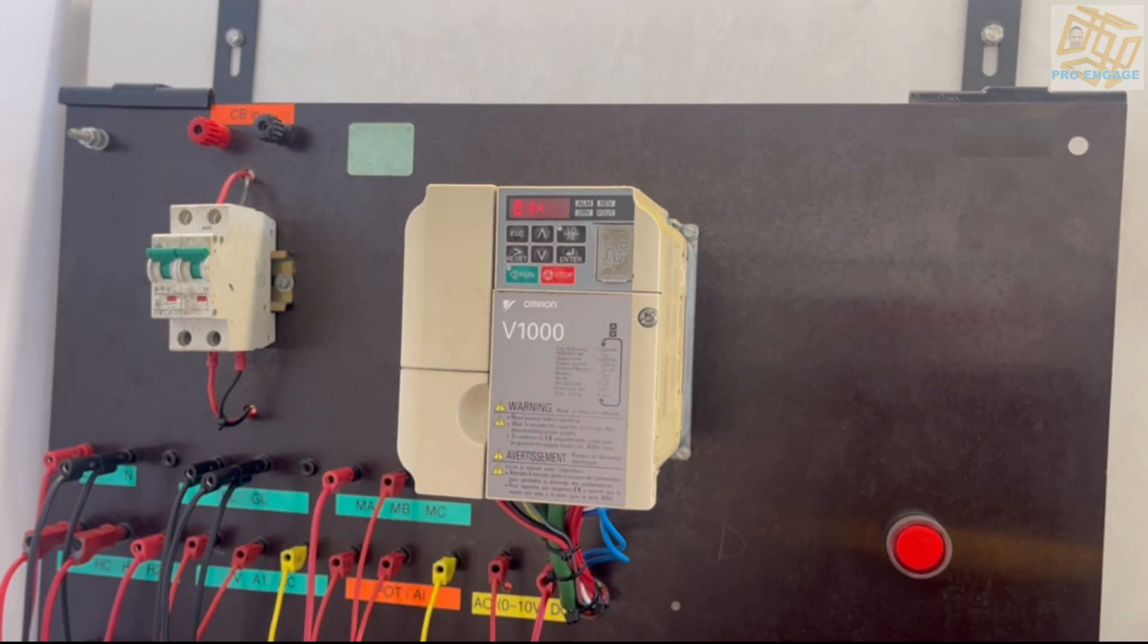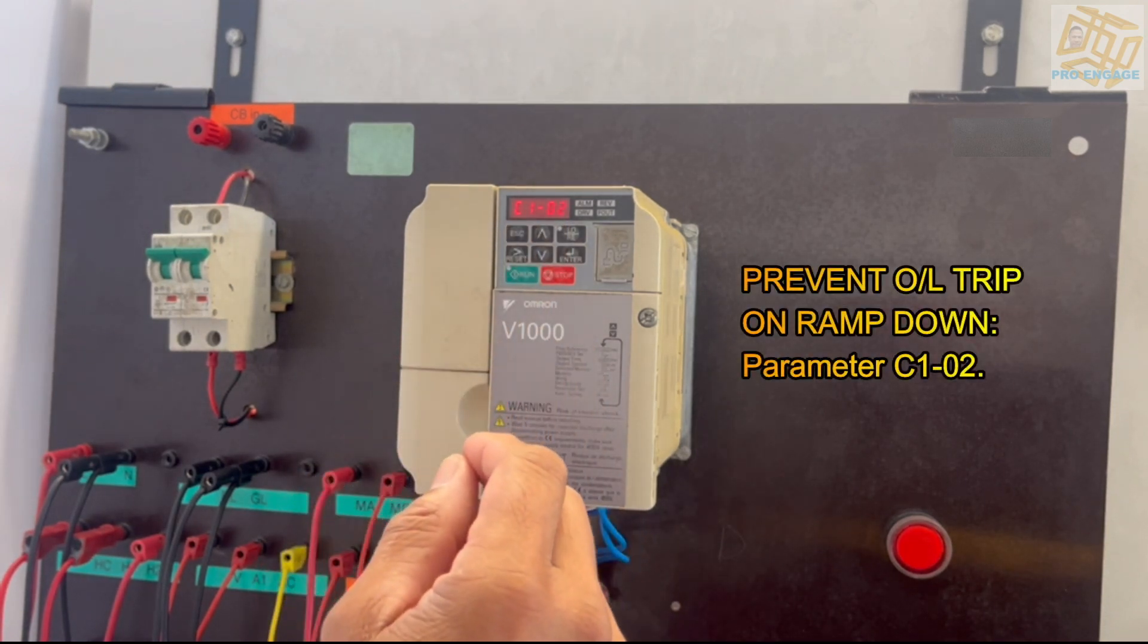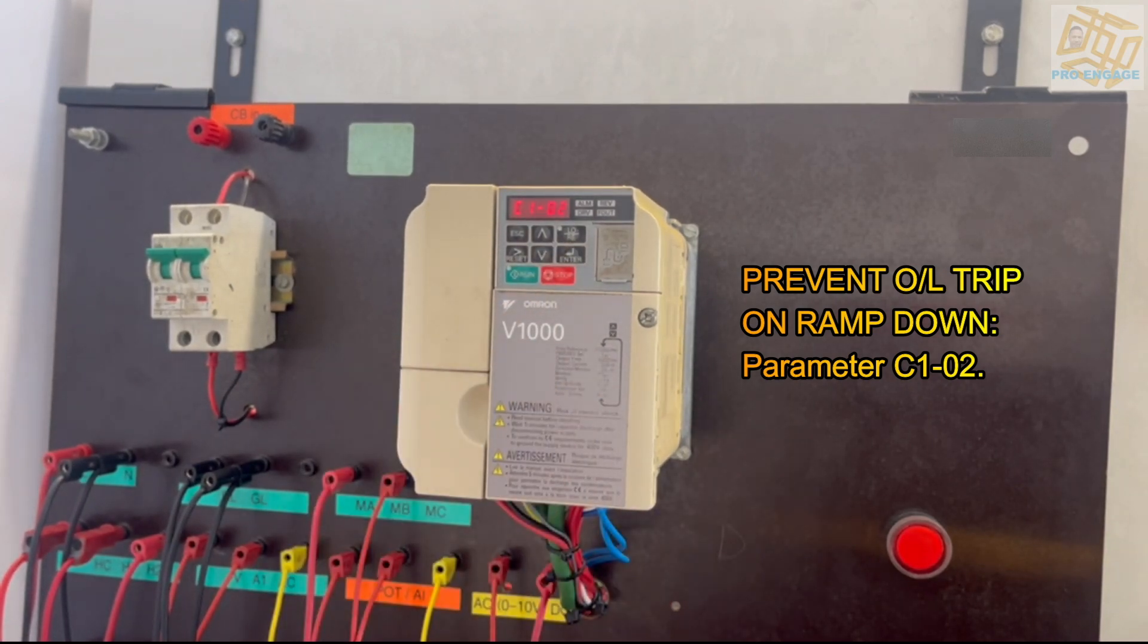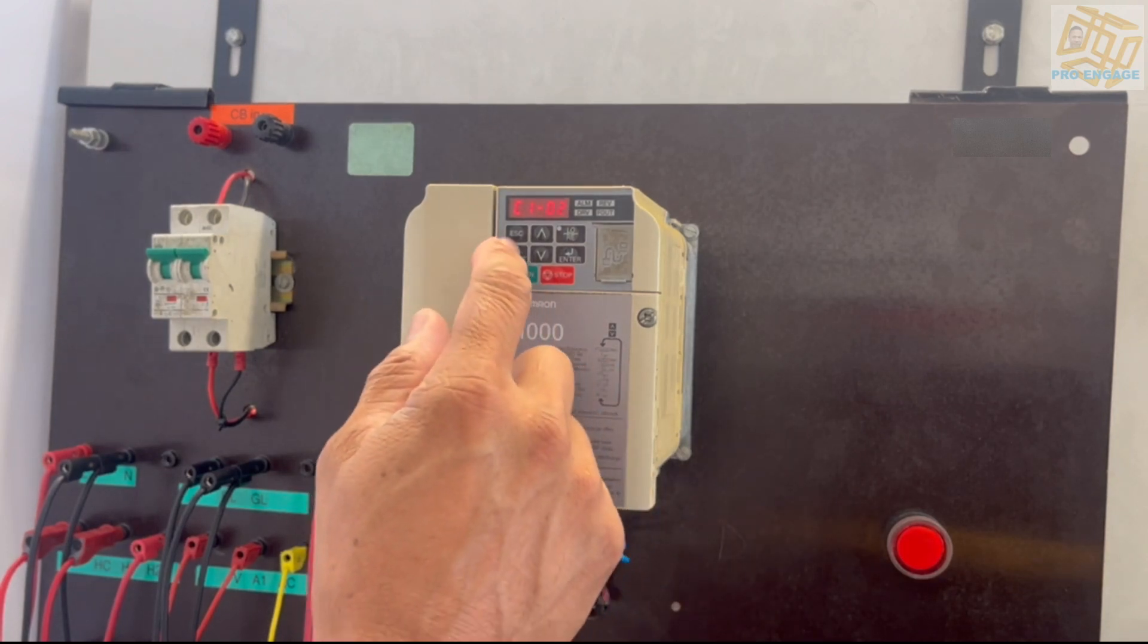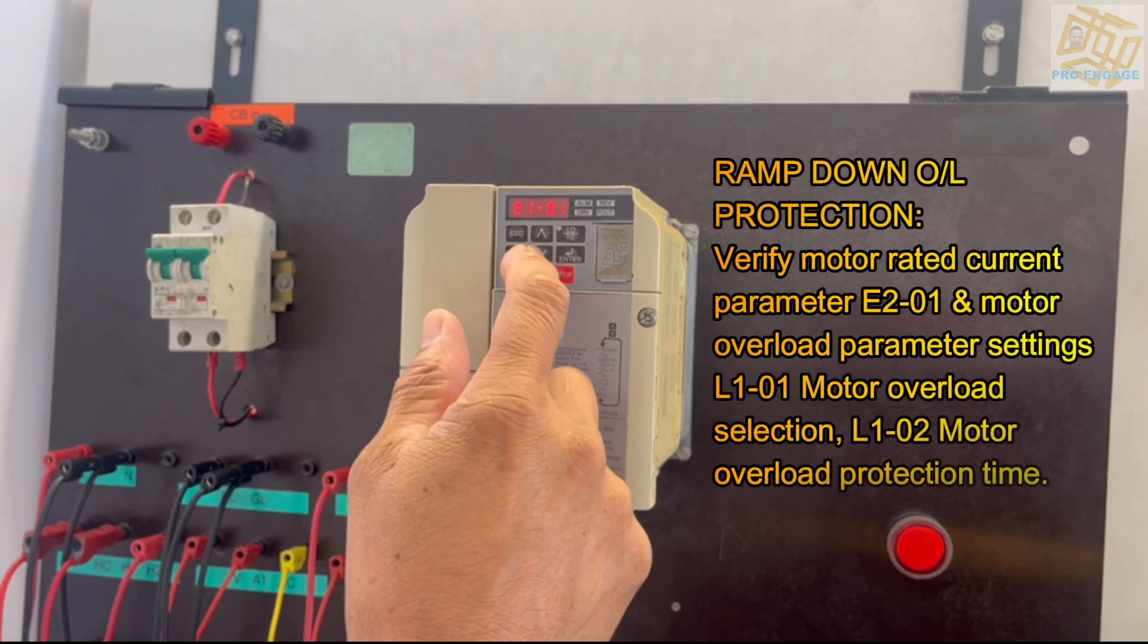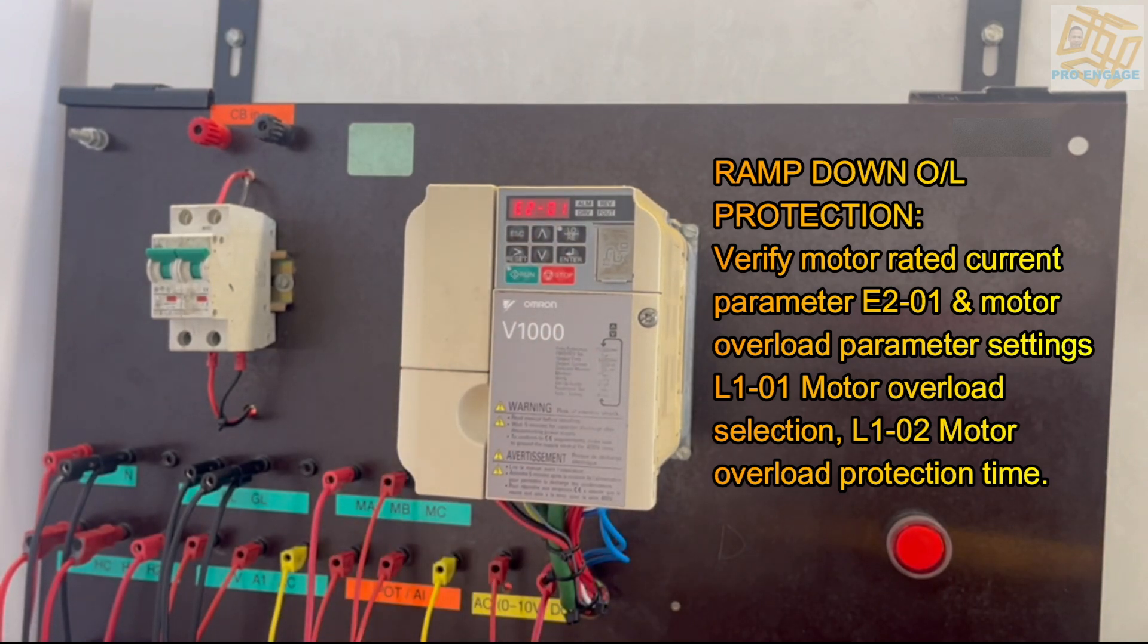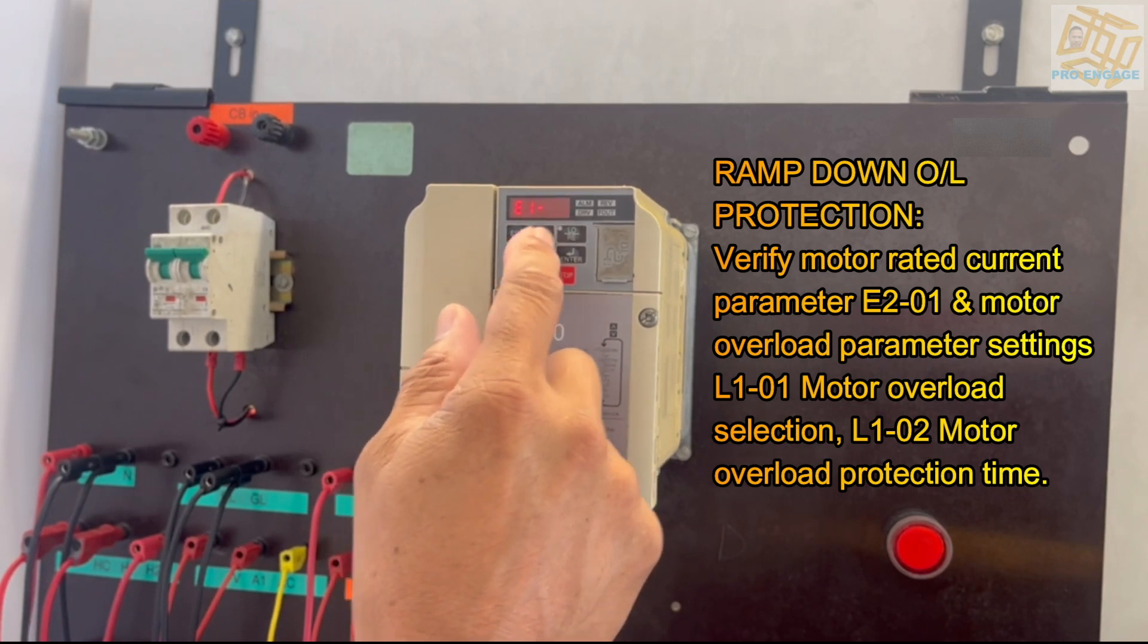The next parameter is prevent overload trip on the ramp down. That's parameter C1-02. You press enter after you've entered all parameters. The next parameter would be ramp down overload protection. Again, verify motor rated current parameter which would be E2-01. Put the parameters in the motor overload settings.